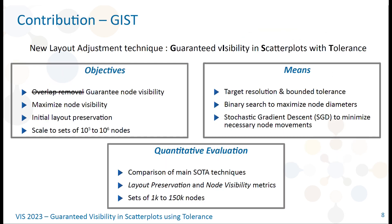Formally, the objectives of GIST are to guarantee nodes' visibility instead of removing overlaps, then maximize this visibility while also preserving the initial layout structures. When designing it, we expected the algorithm to scale to sets of tens to hundreds of thousands of nodes. To achieve these goals, GIST uses three main components: a bounded tolerance to overlap according to a target resolution in the visual space, and a binary search to maximize the node diameters in the visual space.